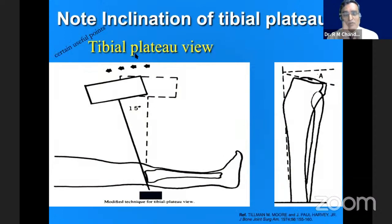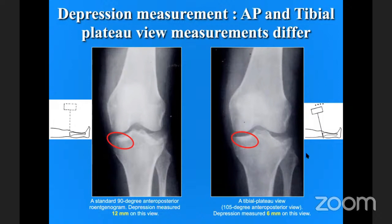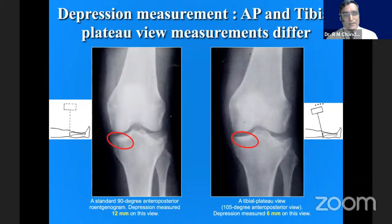The tibial plateau view is really important when we get articular reduction back, as described by Tillman and Moore. We get a 90-degree view as well as a 115-degree view. In the 90-degree view we get the real articular view and can find the sharp subchondral bone. Pay attention: the depression appears only 6 mm in one view, but appears 12 mm in the other. So judge your depressions in these two views.